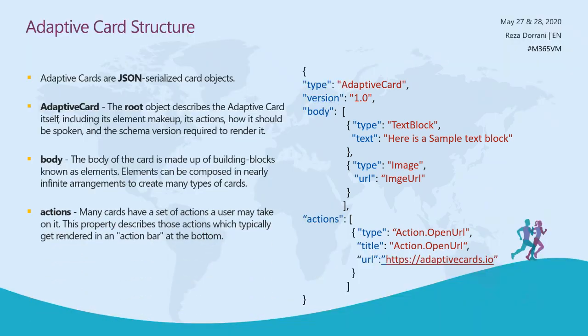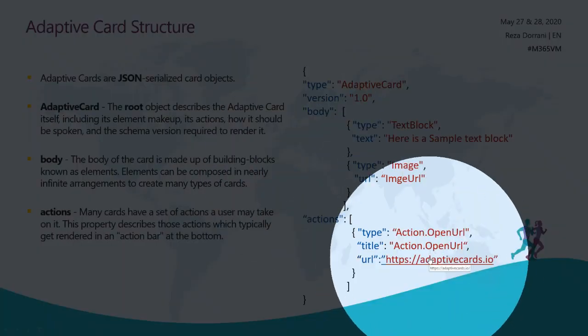You can define as many elements as you want in the body tag. The actions tab is where the action bar at the bottom of the adaptive card is rendered — you can take specific actions like submitting data on the card or opening a particular URL as defined in the JSON.